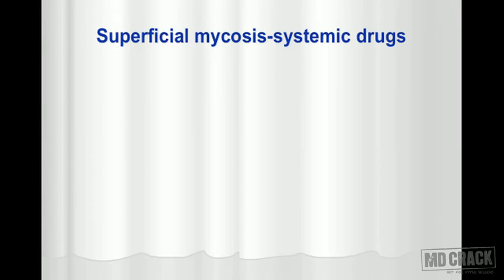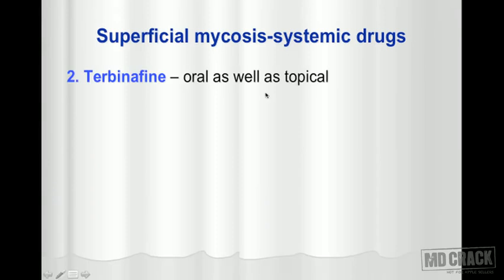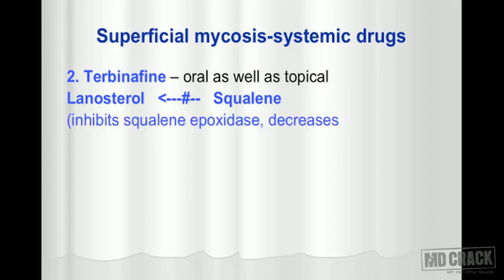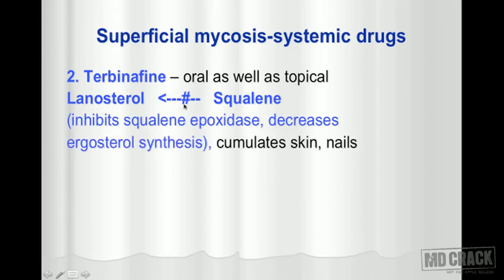The next drug for superficial mycoses is terbinafine, which can be used both orally (systemic route) and topically. Its mechanism of action targets the step of squalene conversion to lanosterol — it inhibits the enzyme squalene epoxidase, ultimately decreasing ergosterol synthesis because lanosterol is destined to become ergosterol.